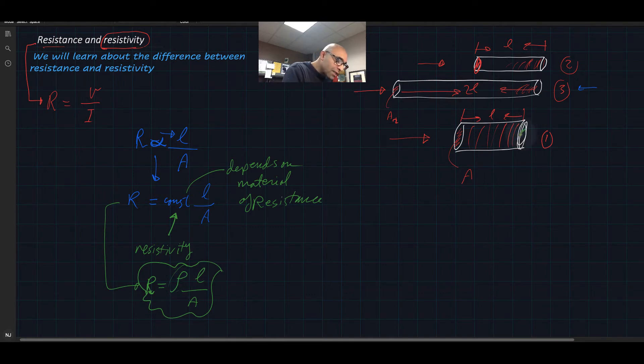Now for example, the surface area of this and the surface area of this, you can find it if it was a disk, for example. The surface area for a disk is equal to pi r squared. And you can put that here if needed to solve an equation.